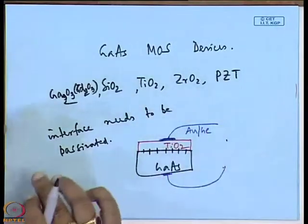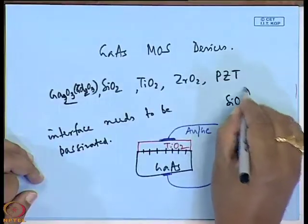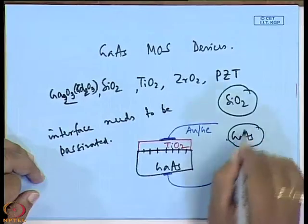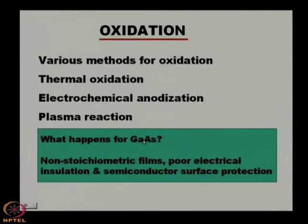The advantage of silicon MOS over GaAs is that silicon oxide is the native oxide of silicon, whereas for GaAs no such native oxide is available. Therefore, despite GaAs's many advantages over silicon, the non-stoichiometric oxide films prevent its widespread use in MOS technology.